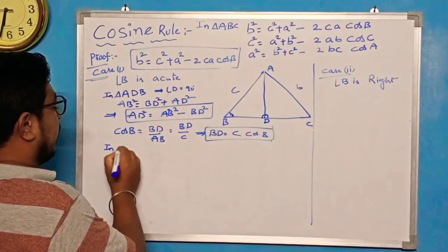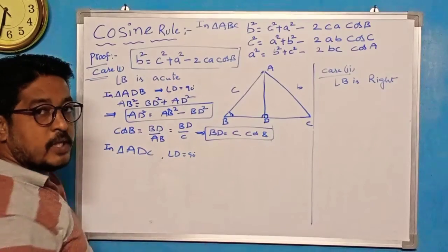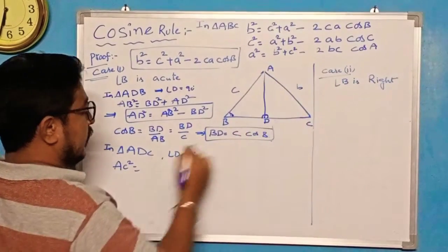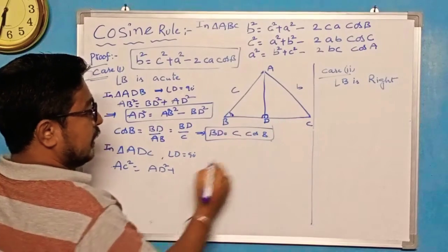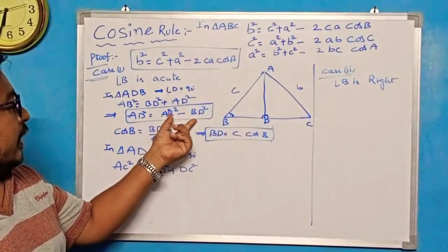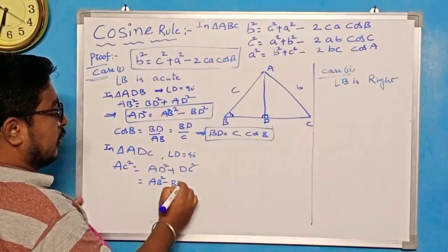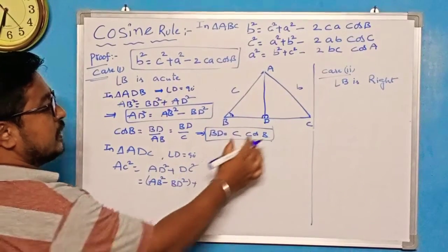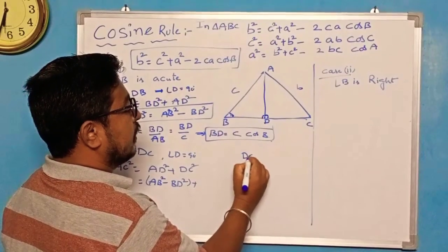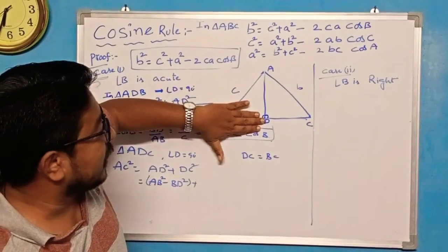Now go to triangle ADC. Here also angle D is 90°, so we use Pythagoras: AC² = AD² + DC². We know AD² = AB² − BD². For DC: from the figure, DC = BC − BD, so DC² = (BC − BD)².